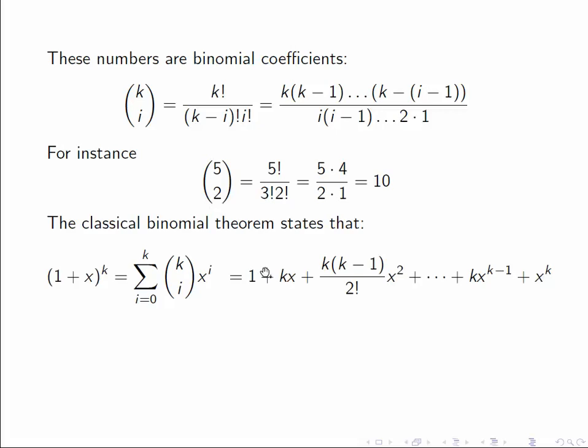The classical binomial theorem states that (1+x)^k is the sum from i equals 0 up to k, k choose i times x^i. And if we write that out explicitly, it looks like 1+kx+k(k-1)/2! times x^2, etc. The coefficient of x^i will be k choose i.